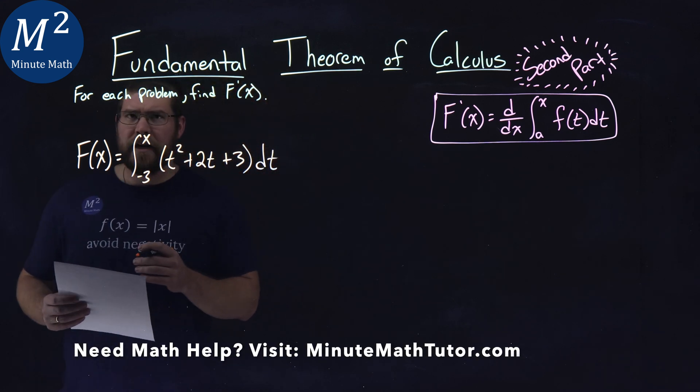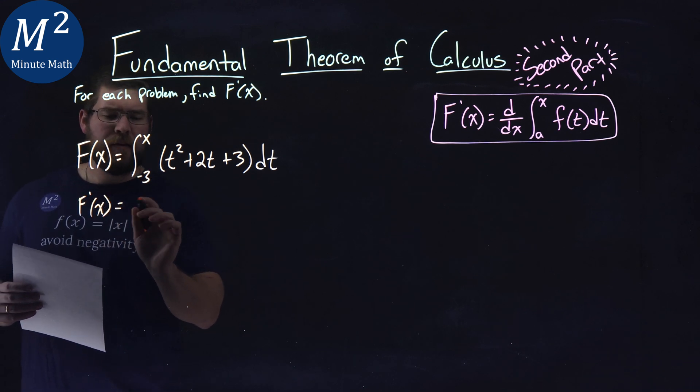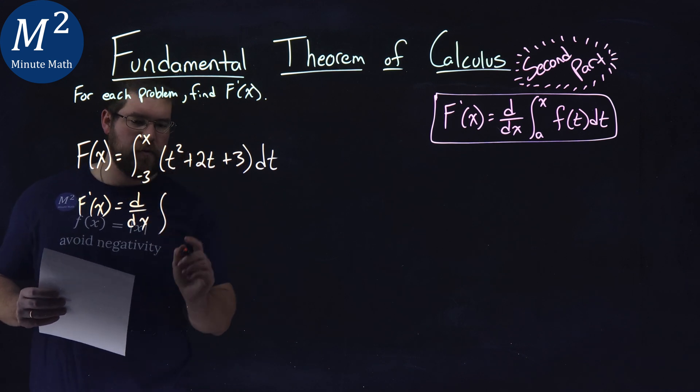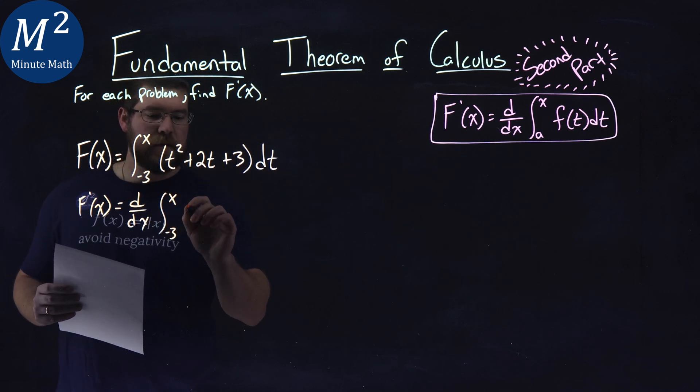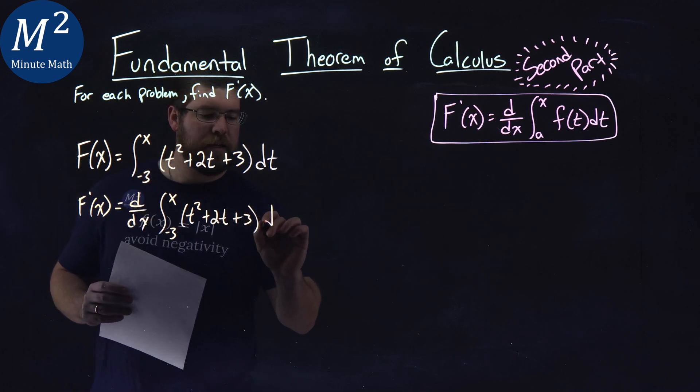So let's use our second fundamental theorem of calculus here and find f prime of x. That's equal to d over dx, the derivative of the integral of f of x, which is the integral from negative 3 to x of t squared plus 2t plus 3 dt.